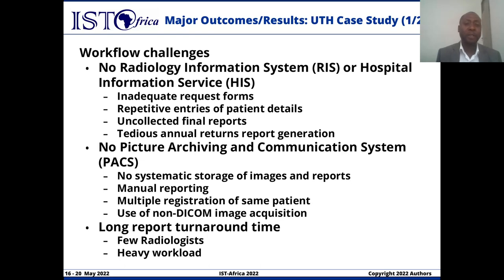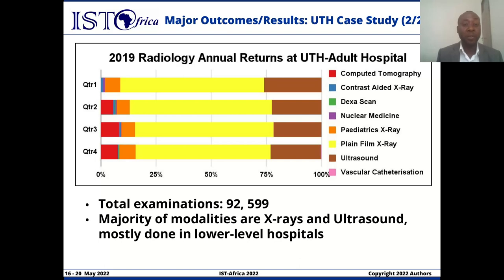Ladies and gentlemen, time is of primary importance in the diagnosis of any health condition. The long report turnaround times at the University Teaching Hospital are twofold. Firstly, there are very few radiologists practicing at the hospitals — specifically only two qualified radiologists working against a heavy workload. In our review, we noted that in 2019, the annual returns revealed a total of 92,600 imaging examinations conducted against only two radiologists available.